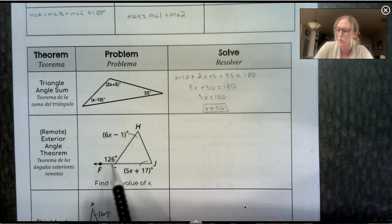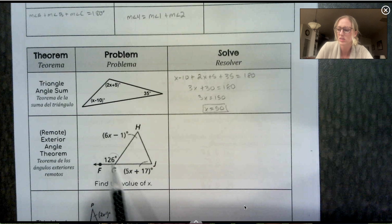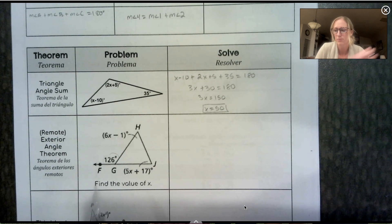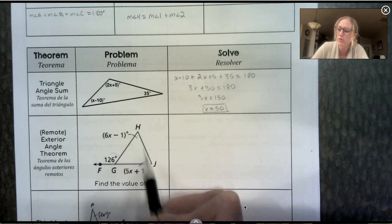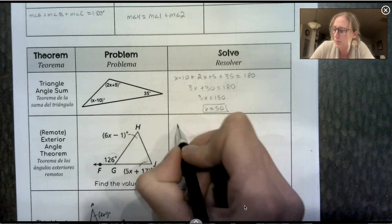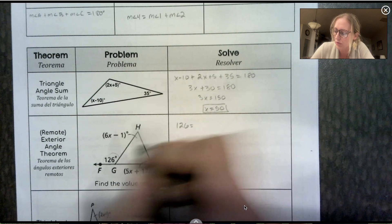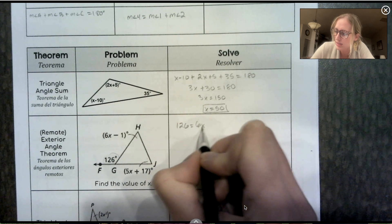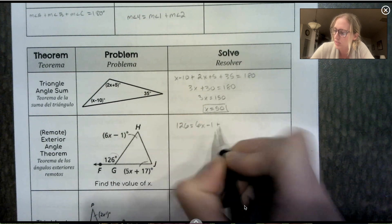So here's my picture. The 126 is the remote exterior angle. So it's equal to the two angles furthest away from it inside the triangle added together. So I'm going to set 126 equal to 6x minus 1 plus 5x plus 17.